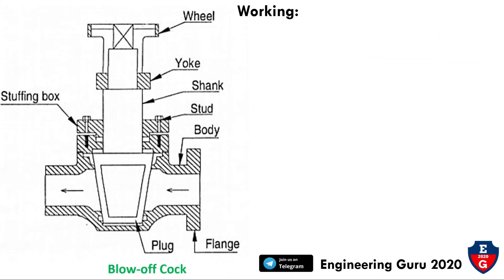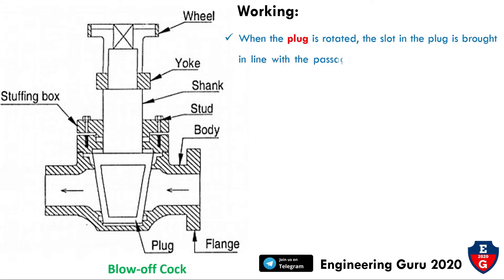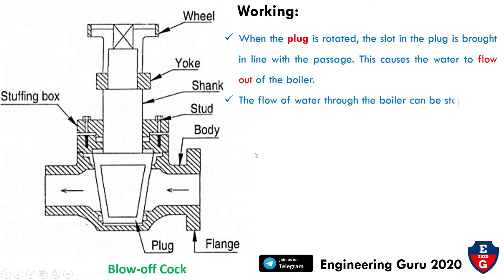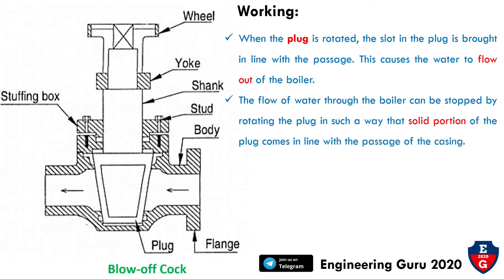Now we will see the working of this cock. When the plug is rotated, the slot in the plug is brought in line with the passage. This causes water to flow out of the boiler. The flow of water from the boiler can be stopped by rotating the plug so that the solid portion of the plug comes in line with the passage of the casing.